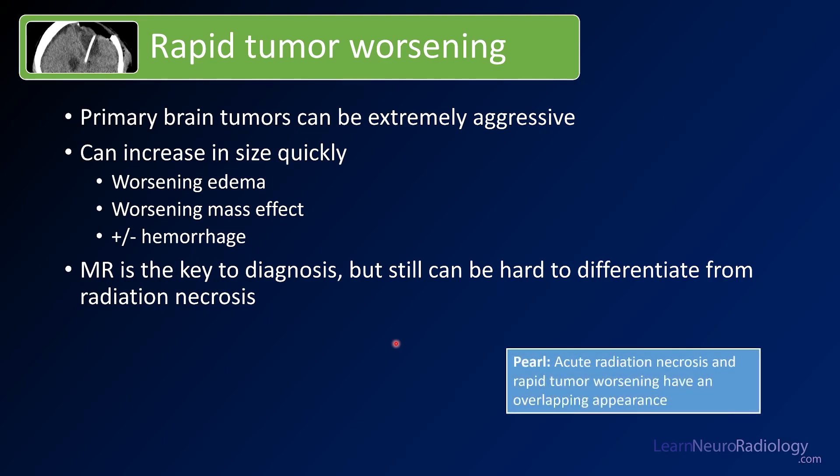Acute radiation necrosis and rapid tumor worsening have a pretty overlapping appearance, so you often won't be able to tell the difference, particularly in the early phase.